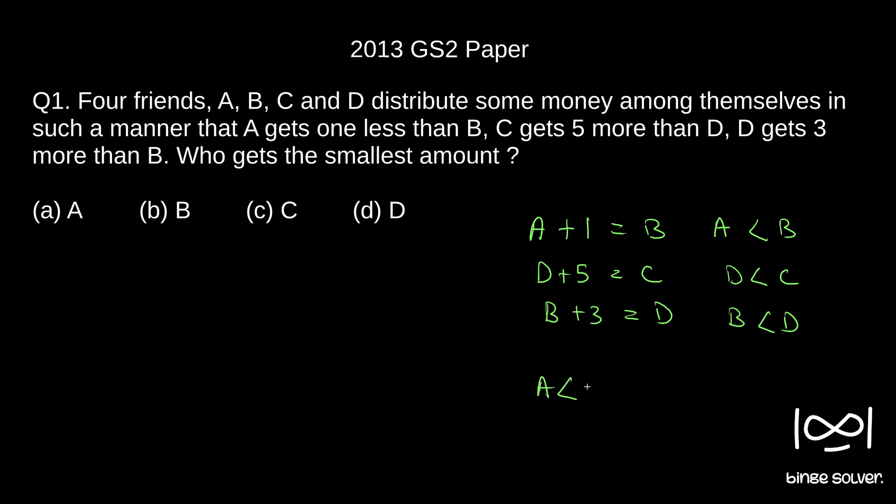Or if we write A less than B and we know B less than D, so B less than D and D less than C. So among the four, A is the smallest.